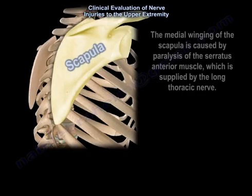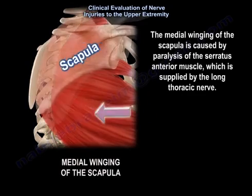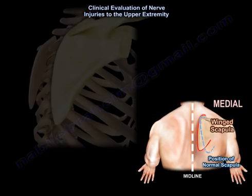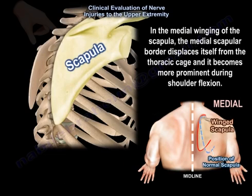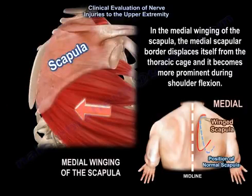The medial winging of the scapula is caused by paralysis of the serratus anterior muscle, which is supplied by the long thoracic nerve. In medial winging of the scapula, the medial scapular border displaces itself from the thoracic cage and becomes more prominent during shoulder flexion.